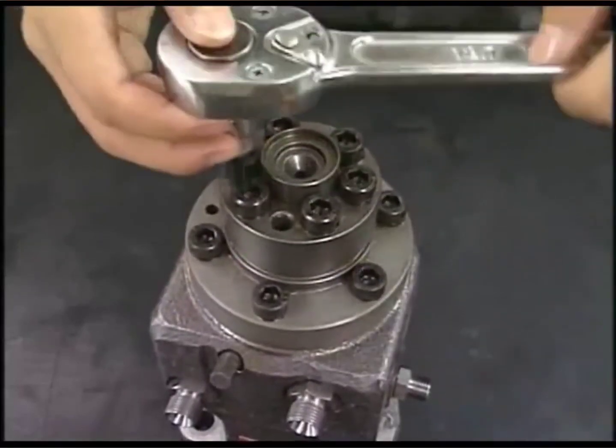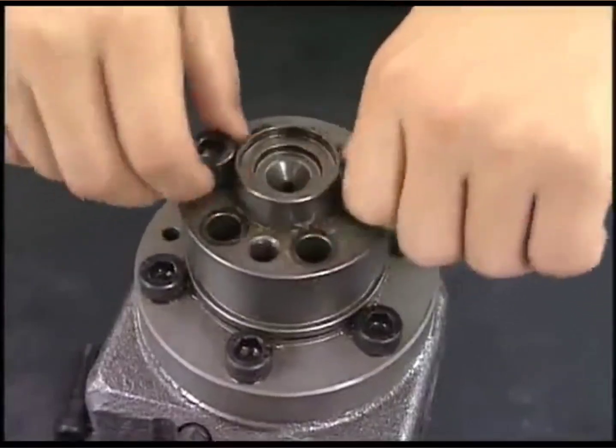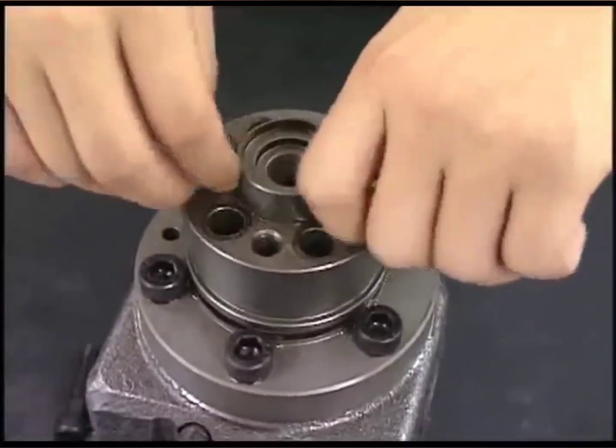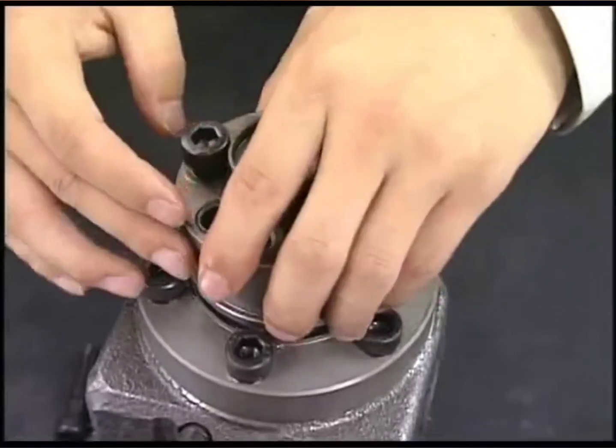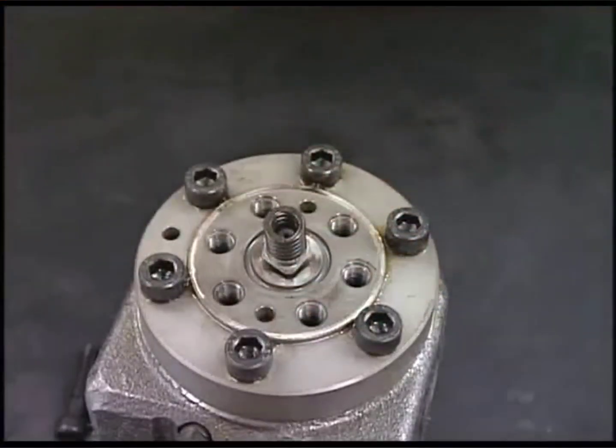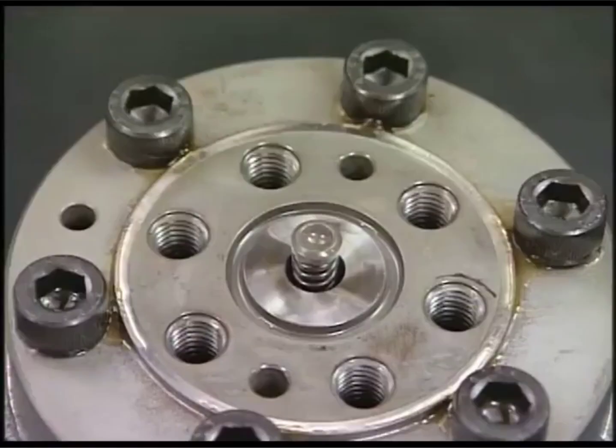Next, detach the support bolt of delivery valve with the hexagonal wrench and remove the delivery valve and square ring. Be careful not to lose parts of delivery valve because they are too small.